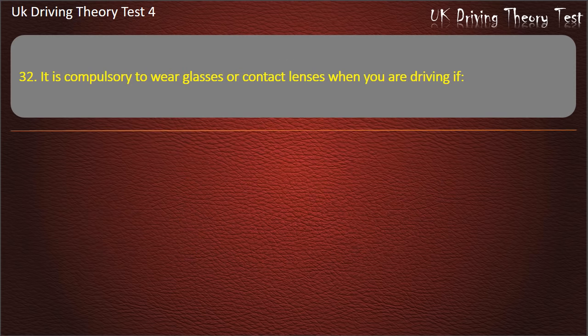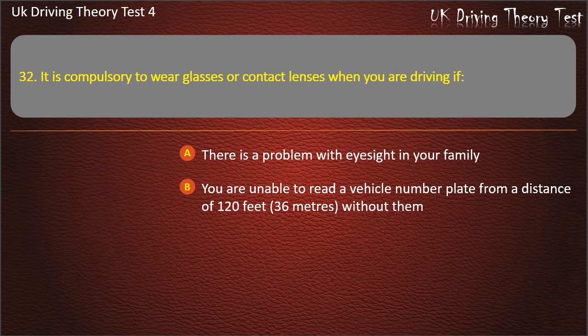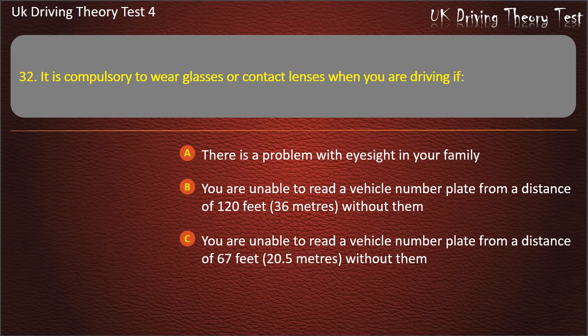Question 32. It is compulsory to wear glasses or contact lenses when driving if: there is a problem with eyesight in your family; you are unable to read a vehicle number plate from 120 feet (36 metres) without them; you are unable to read a number plate from 60 feet (20.5 metres) without them; or you have a disabled badge. Answer: You are unable to read a vehicle number plate from 20 metres (67 feet) without them.